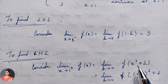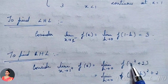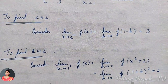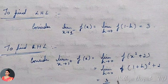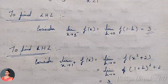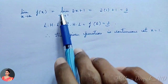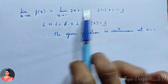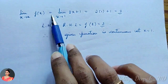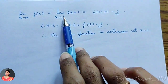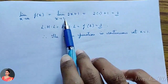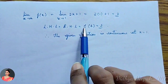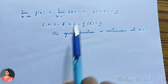Applying the limit as h → 0: (1 + 0)² + 2 = 1 + 2 = 3. So RHL = 3. Now we find the limit as x tends to 1 of f(x). At x = 1, f(x) = 2x + 1, so implementing x = 1 we get 2(1) + 1 = 3. Therefore the limit as x tends to 1 of f(x) = 3. Also, f(1) = 2(1) + 1 = 3. So LHL = RHL = limit = f(1) = 3.